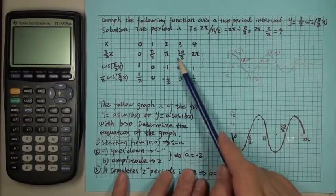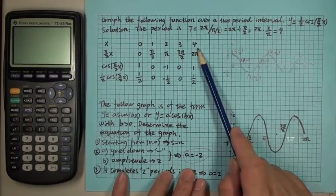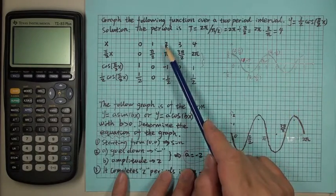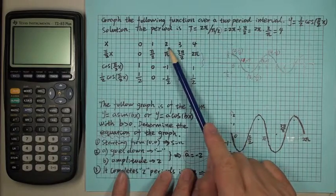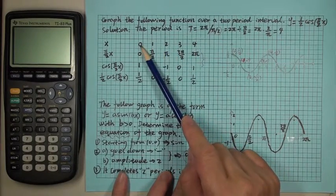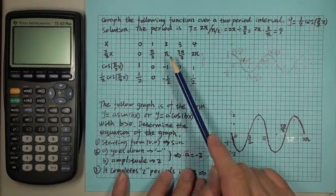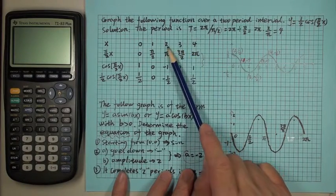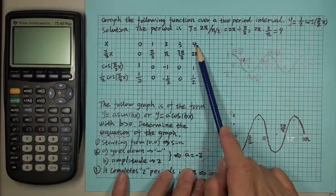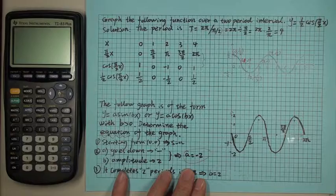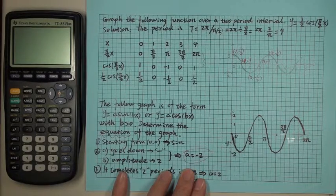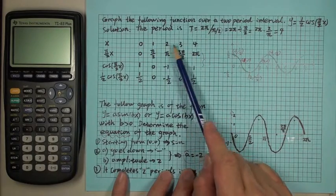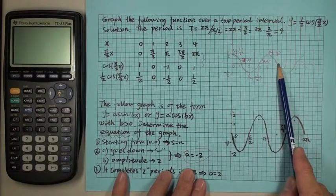Now let's see why the period is four. The middle value between zero and four is two. The middle value between zero and two is one. And the middle value between two and four is three — because two plus four is six, divided by two is three. So we choose those five x values: zero, one, two, three, four. They are in the first period.